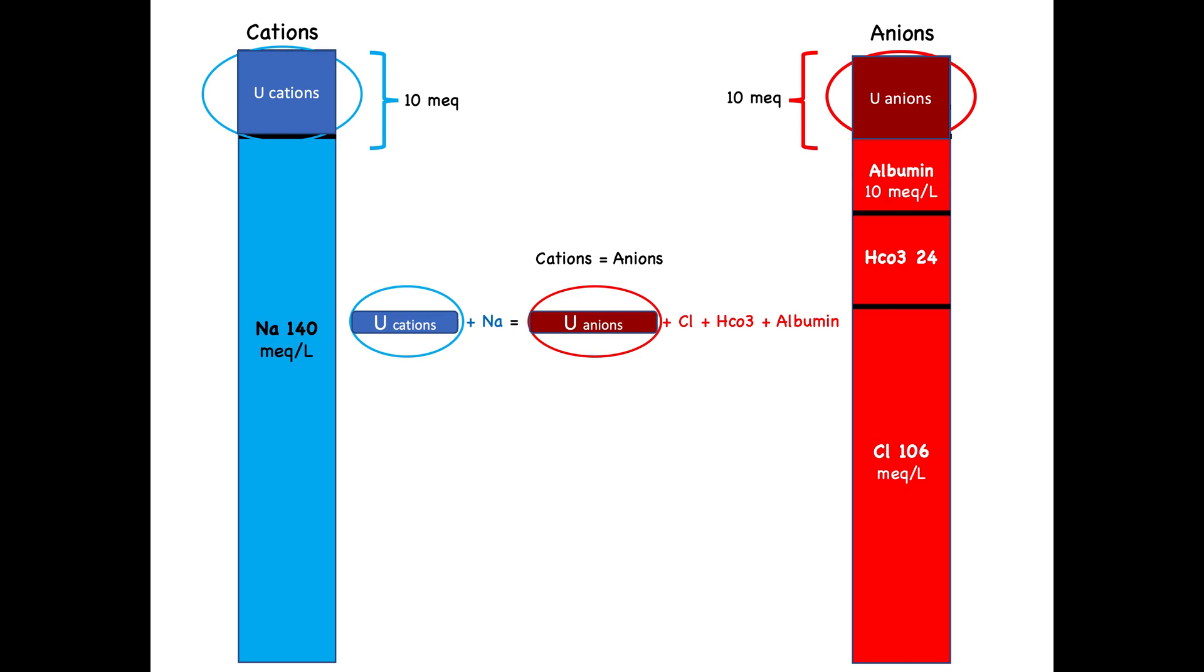In addition, the concentration of both sides is actually very close. So, question. Can they offset each other? Can I just omit them and take them out of the equation? And the answer is yes. That will leave me with sodium, chloride, bicarb, and albumin.